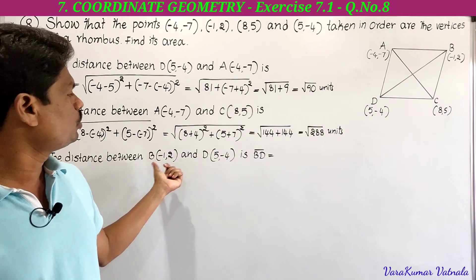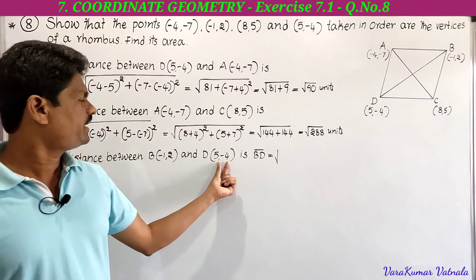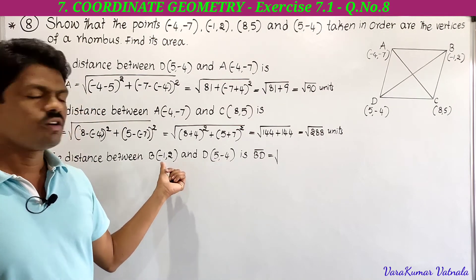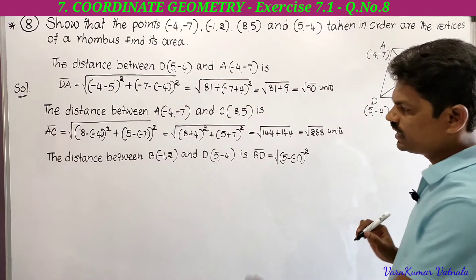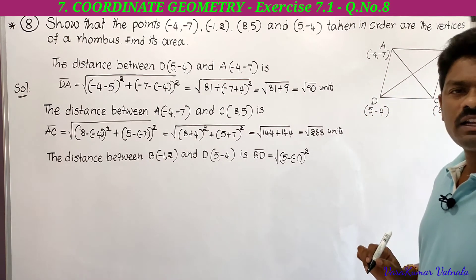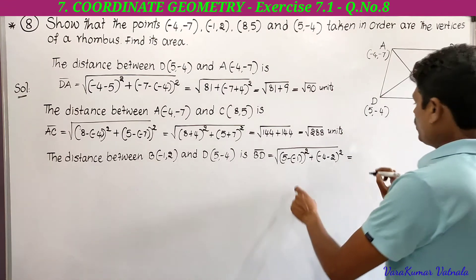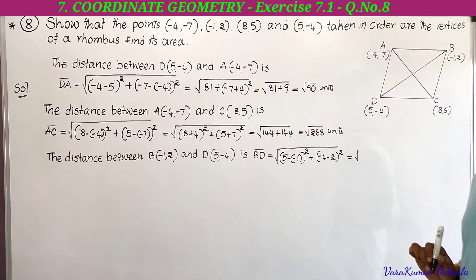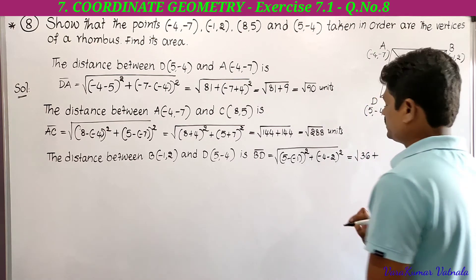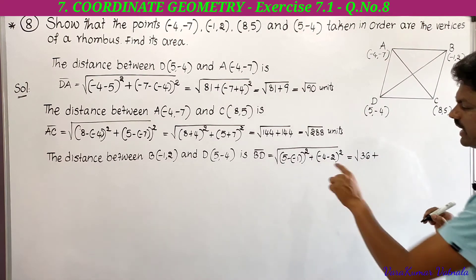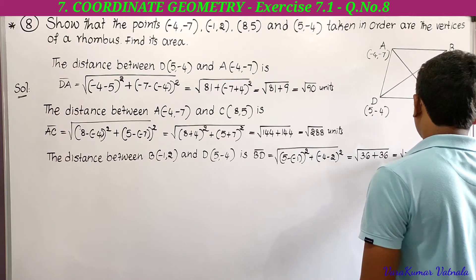For diagonal BD, the distance between B(−1, 2) and D(5, −4): let (x₁, y₁) = (−1, 2) and (x₂, y₂) = (5, −4). Substituting: √[(5 − (−1))² + (−4 − 2)²] = √[(5 + 1)² + (−6)²] = √[6² + 6²] = √[36 + 36] = √72 units.